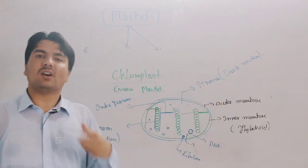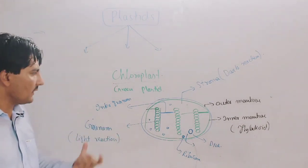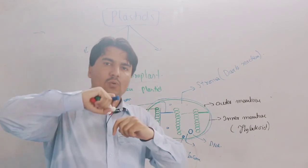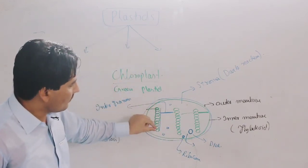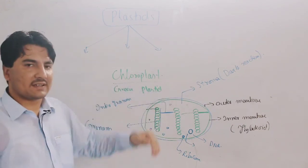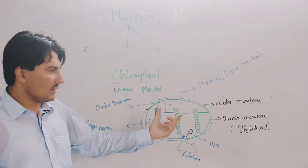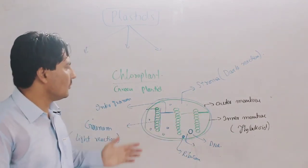So stroma is the site of dark reaction of photosynthesis. Granum is the site of light reaction of photosynthesis, and granum is composed of thylakoids - stacks of thylakoids piled above each other. In one chloroplast, there can be 40 to 60 grana.